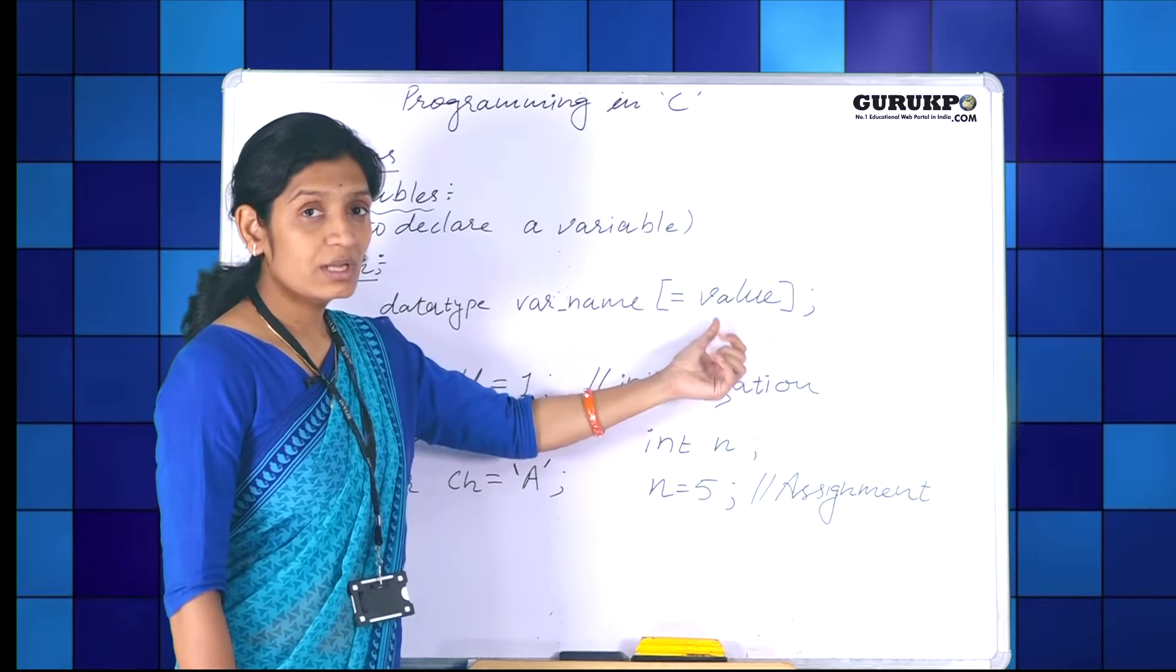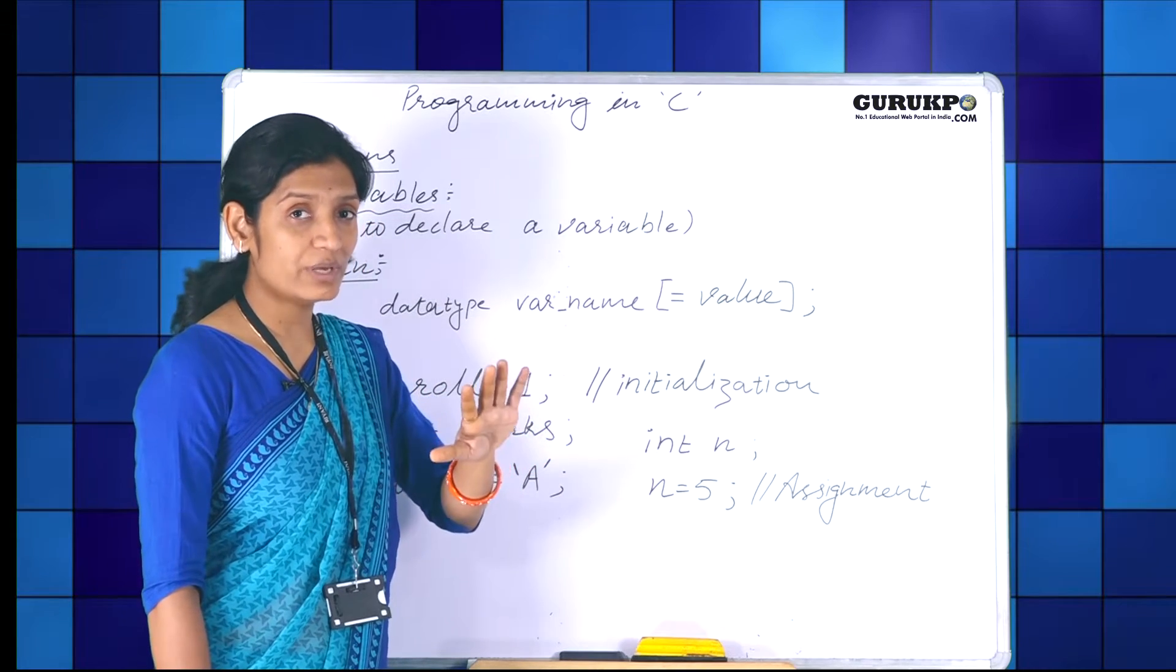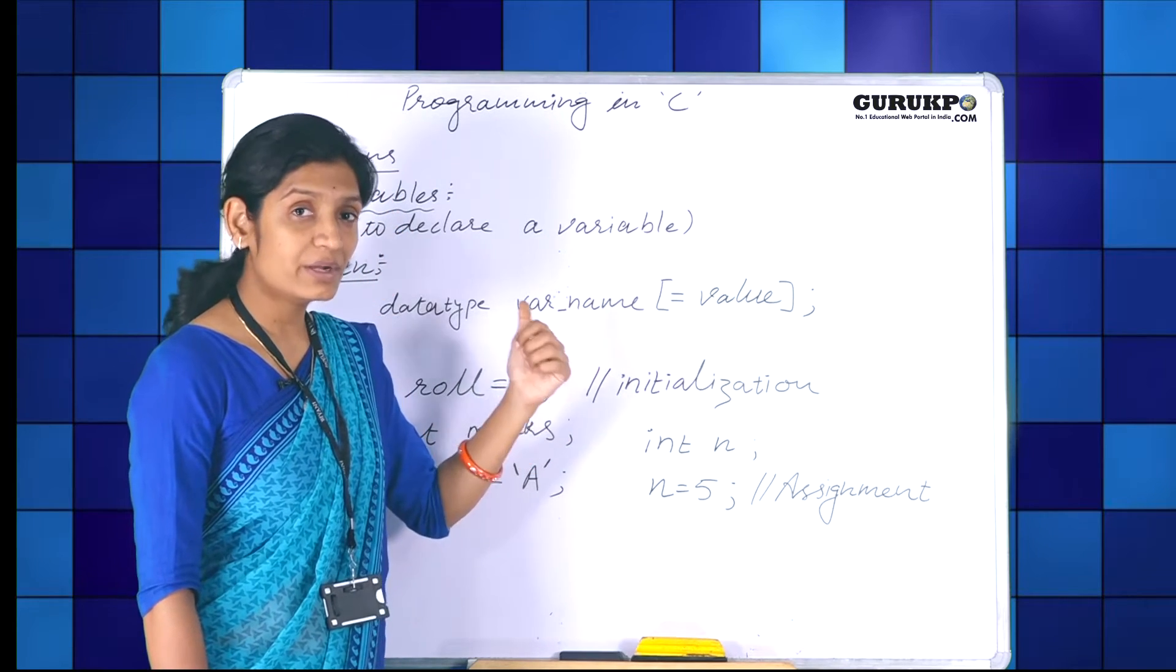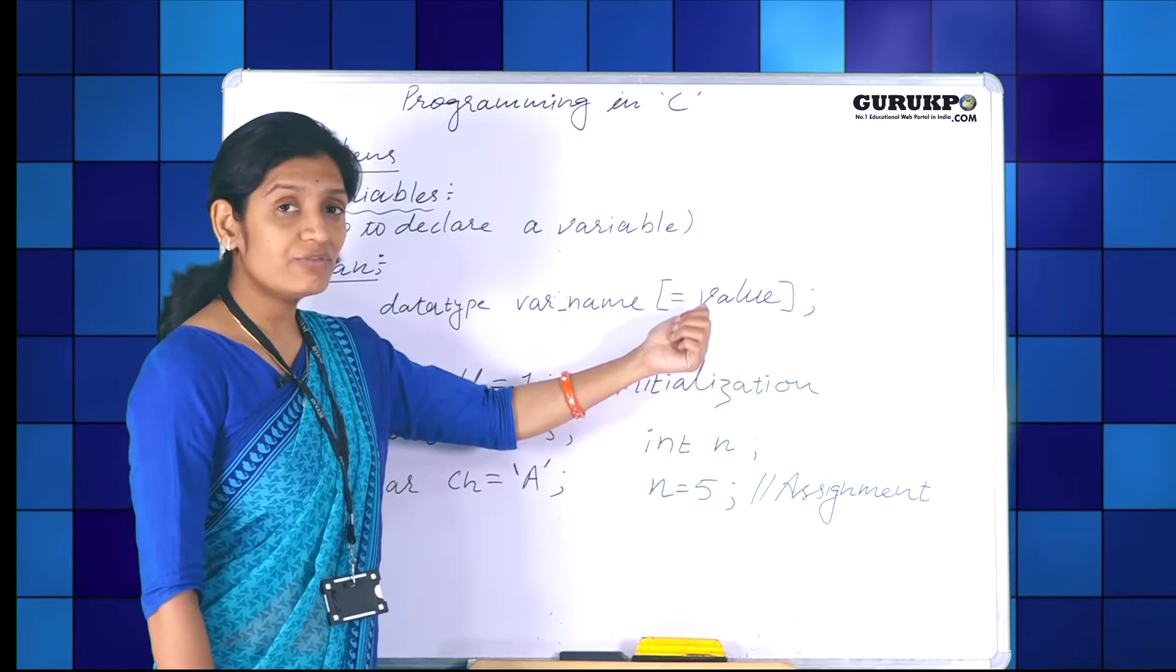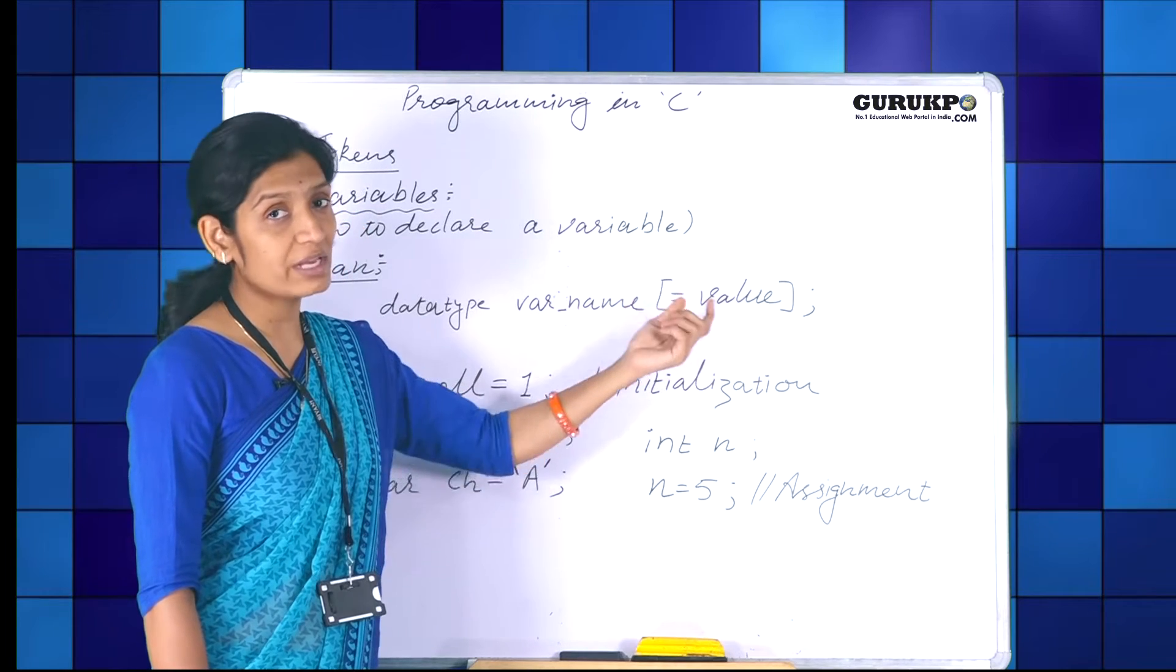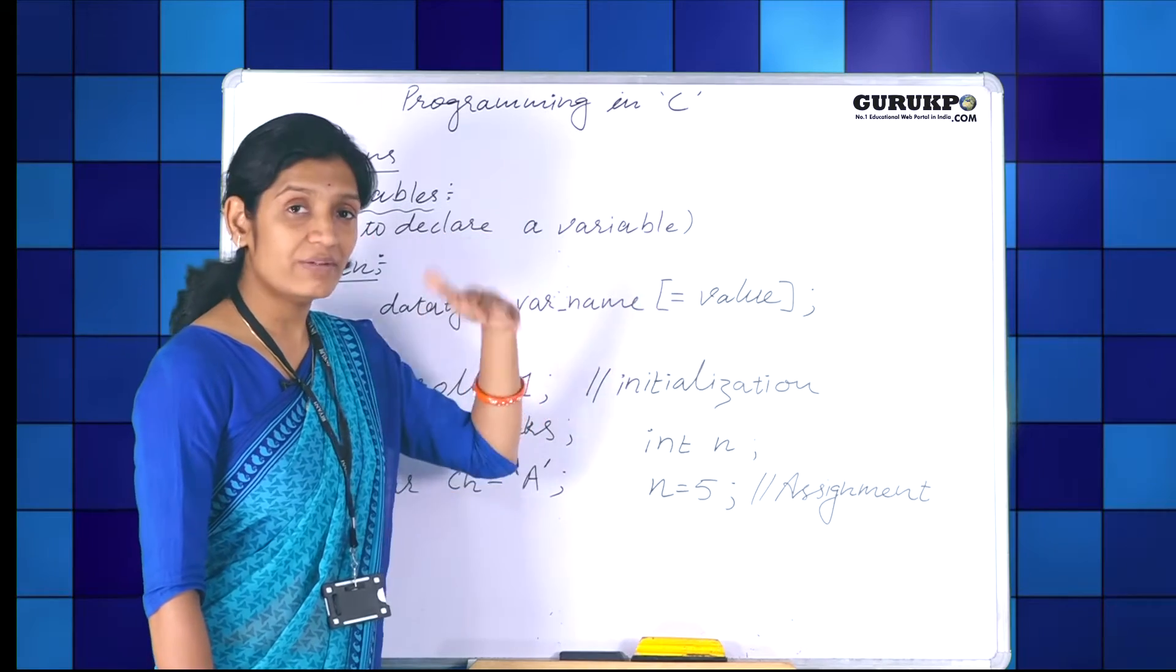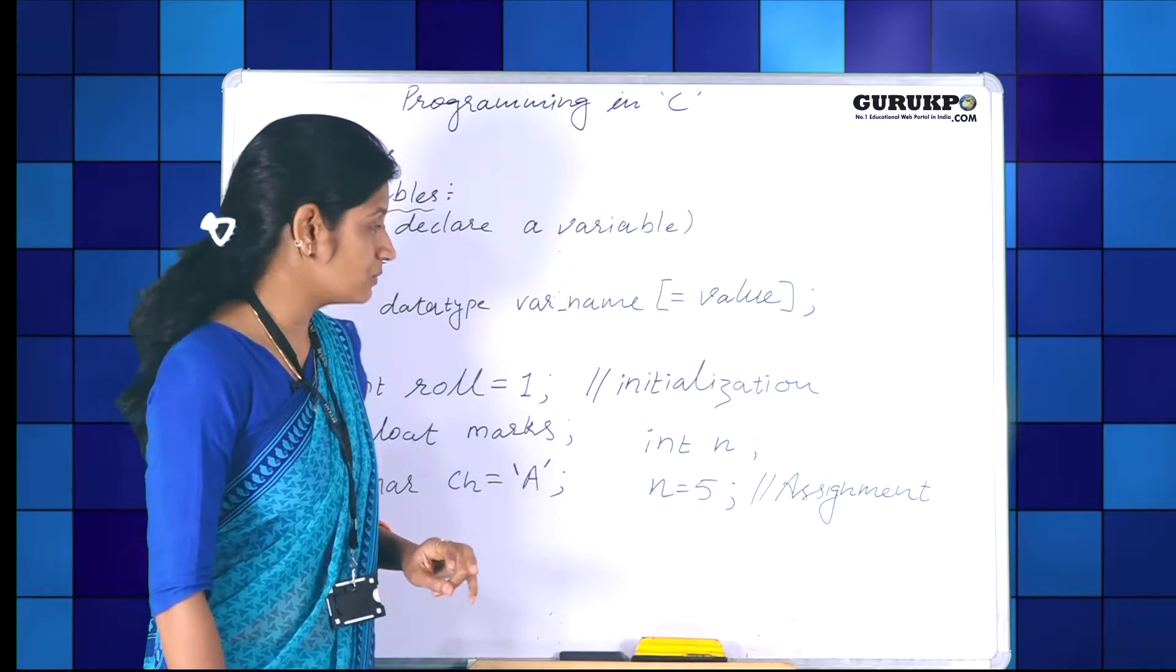The next thing is the value that we are going to assign the variable. This is optional while declaring a variable. It means if we wish, if we have the value at the time of declaration, we can give the value to the variable. And if we do not have the value, then we can later assign the value.